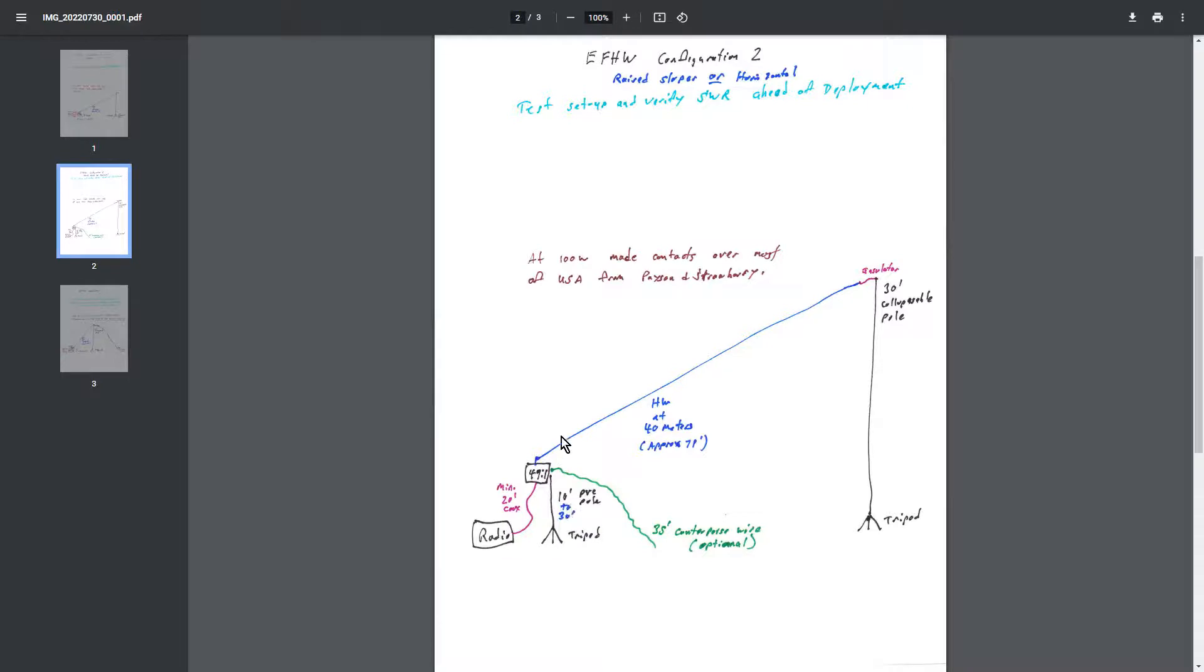But you could go as high as 30 feet and make this a horizontal. That's why this says raised sloper or horizontal. That's supposed to say horizontal there. And you could do that. It really won't change anything. And you might even get more contacts with it. Who knows? But this is what I used at the last field day and it worked quite well.